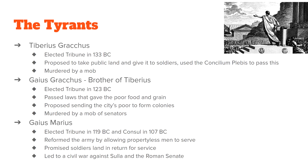About ten years later, his brother Gaius Gracchus was elected tribune and tried to pick up where his brother left off. Gaius Gracchus passed laws to give food and grain to poor people — basically a form of food stamps or financial assistance for food within Rome. He also proposed sending the poor of Rome out to form colonies to try to revive the Roman Republic. Just like his brother, Gaius was assassinated by a mob.